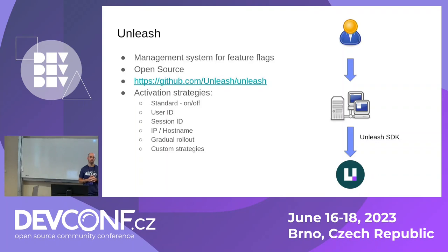I'd like to talk to you about Unleash. Unleash is a management system for feature toggles or feature flags. It's an open source project available on GitHub. The way it works is: the user is using your software — via CLI, API call, or UI — and somewhere in your code there's that feature toggle check. Using Unleash, that check makes an API call to the Unleash system asking if the feature is enabled, providing context like user information, and then Unleash responds with yes or no, and your code branches accordingly.